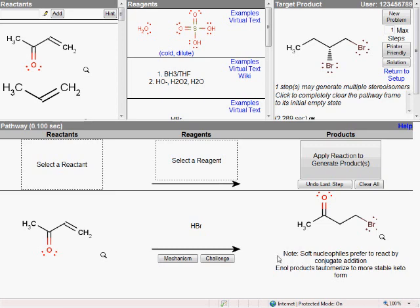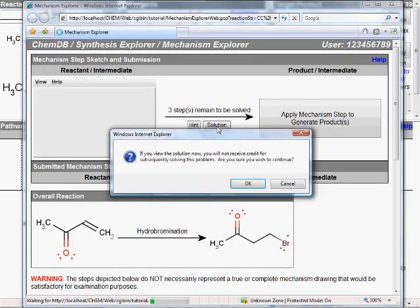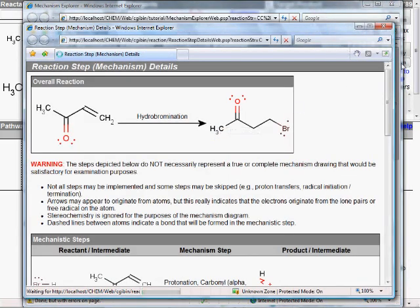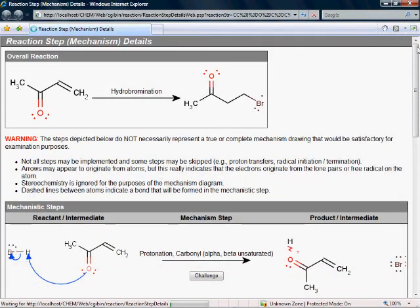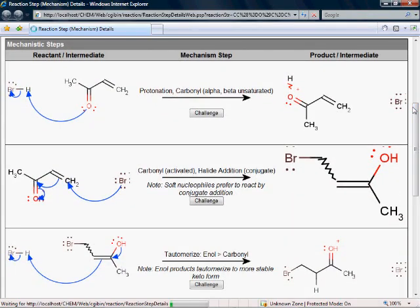And again, if those words have no meaning to you, that's okay, because we can always drill down to the mechanism. But remember, this was a novel reactant that I just drew a second ago, and yet still, the system is able to produce a complete curved arrow mechanism diagram to explain the course of this reaction. Similar to the synthesis problems, there are also a set of non-random mechanism problems that you can work on.